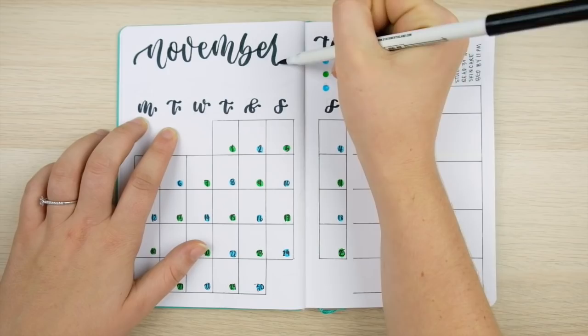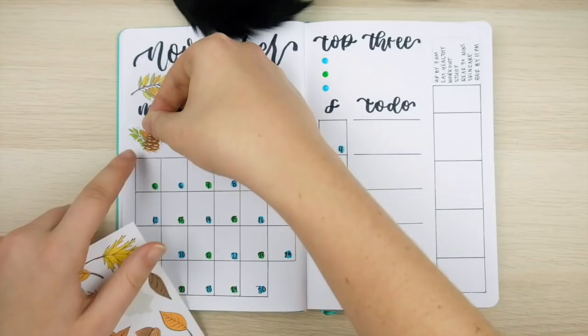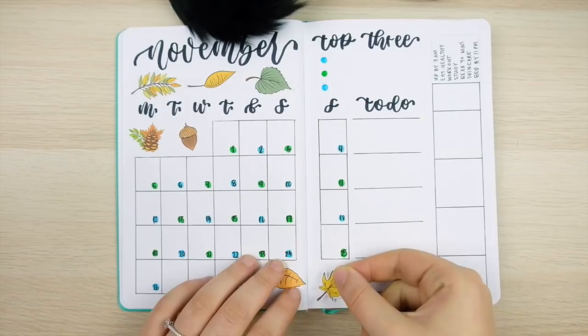Instead you can save yourself the pages and the effort and just include a mini version like this on your monthly spread, which makes it really easy to see every single event, task, and habit that you need to complete that month all at once. Now I'm just going to complete this spread with some fall leaf decoration which is just perfect for November.